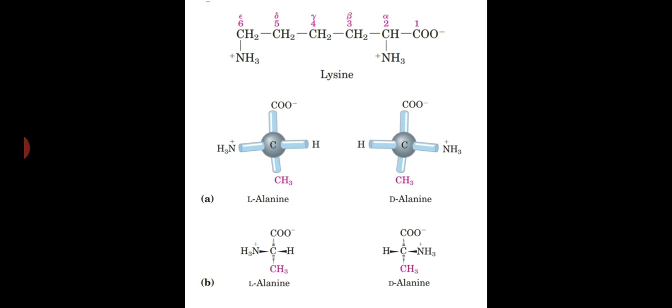D amino acids are dextrorotatory, that is they can rotate the plane polarized light clockwise. L amino acids are levorotatory, that is they can rotate the plane polarized light counterclockwise.